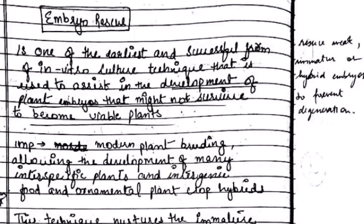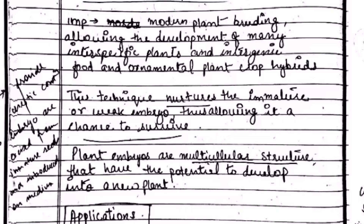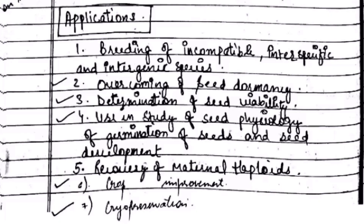We use embryo rescue for plants which are weak, immature, or hybrid embryos to prevent their degeneration. This technique nurtures the immature or weak embryo and gives it a chance to survive. Applications of embryo culture include cryopreservation, crop improvement, and overcoming seed dormancy, among others.